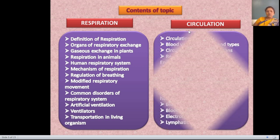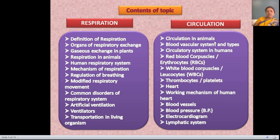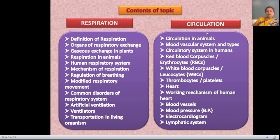For circulation, the sub-points include: circulation in animals, blood vascular system and its types, circulatory system in humans, red blood corpuscles (erythrocytes/RBCs), white blood corpuscles (leukocytes/WBCs), thrombocytes or platelets, human heart, working mechanism of the human heart, blood vessels, blood pressure (BP), electrocardiogram, and lymphatic system.